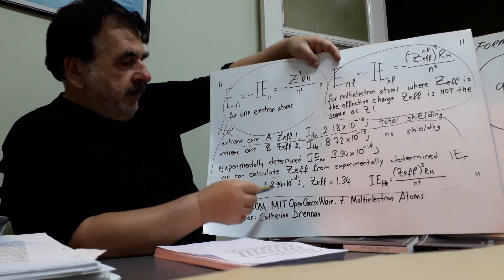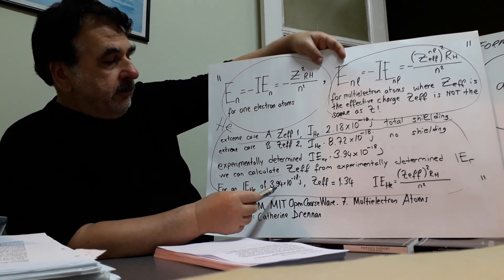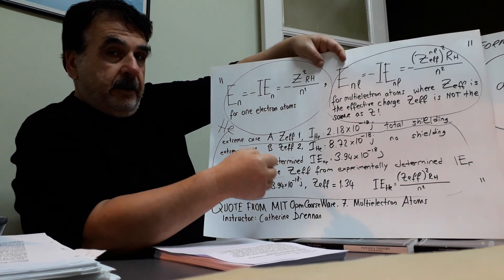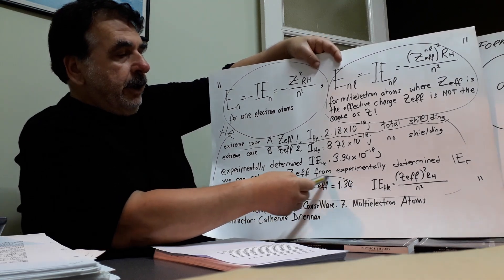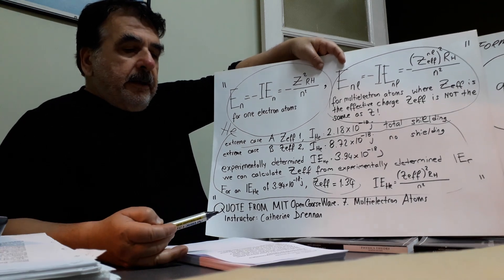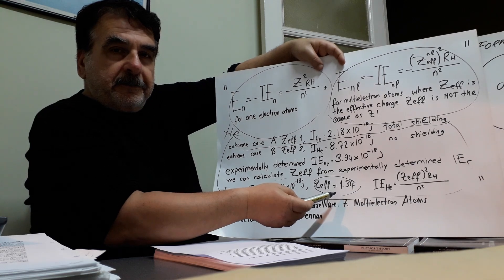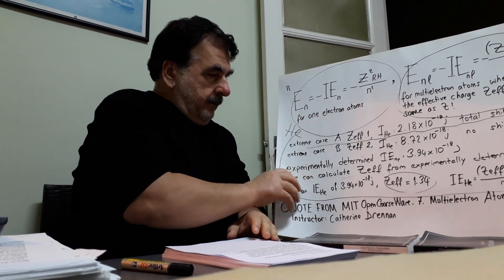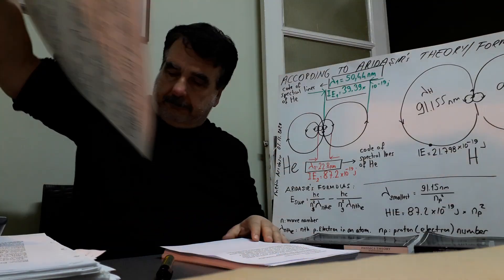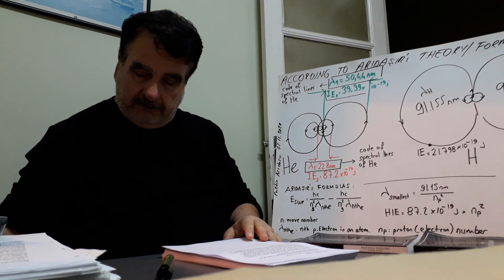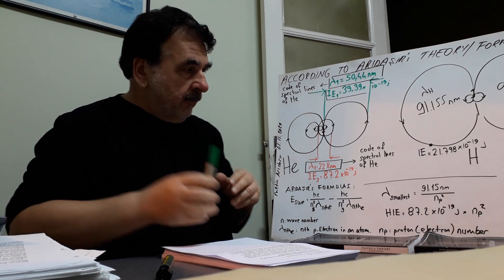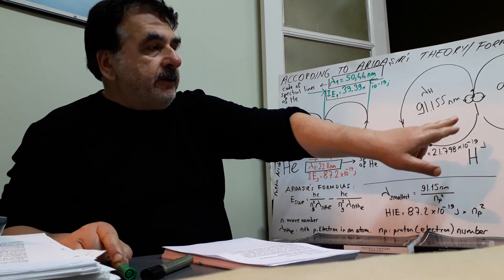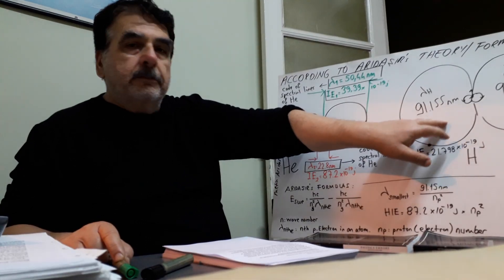For that experimental ionization energy of 3.94 × 10⁻¹⁸ joules, they find a 'near effective Z' or effective nuclear charge. This is fake. According to me, 2.18 × 10⁻¹⁹ joules belongs only to the hydrogen atom.